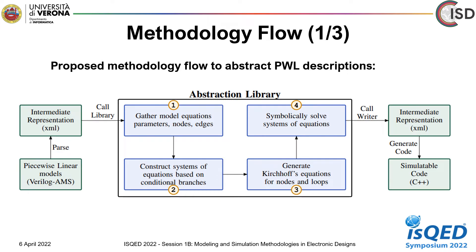The software infrastructure required to abstract a Verilog-AMS piecewise linear model is described in this figure. The library that implements the methodology is built with C++ language. Initially, a piecewise linear model written in Verilog-AMS is parsed and transformed into an intermediate representation. This intermediate description is basically an abstract syntax tree written in XML that stores all the information of the original model by structuring it in a tree. Then we call the library, where we gather all the model equations, parameters, and nodes.